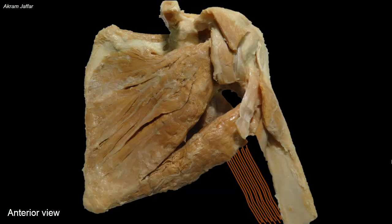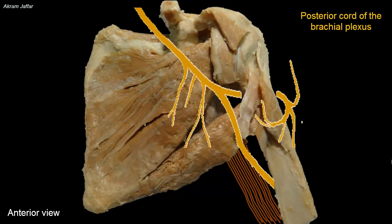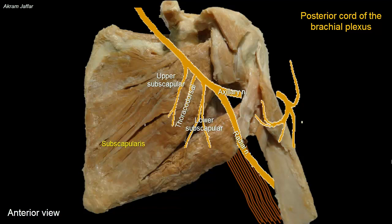Going back to the anterior view, I will superimpose the posterior cord of the brachial plexus on the muscles. The posterior cord has five branches; the axillary and radial nerves are its two terminal branches. The other three branches are the upper and lower subscapular nerves, and in between is the thoracodorsal nerve — the nerve to latissimus dorsi. The upper subscapular nerve supplies subscapularis, and the lower subscapular nerve supplies subscapularis and teres major. The thoracodorsal nerve, which arises between the two subscapular nerves, supplies latissimus dorsi.